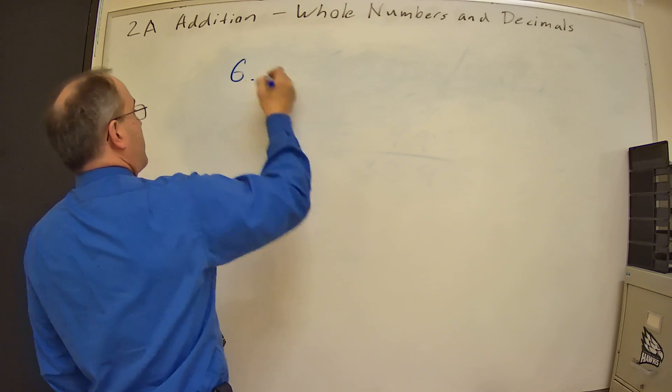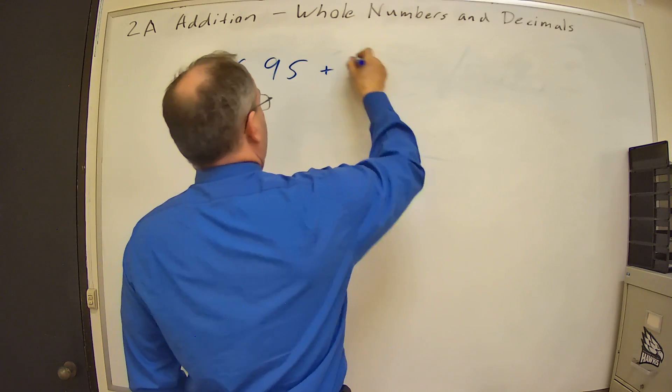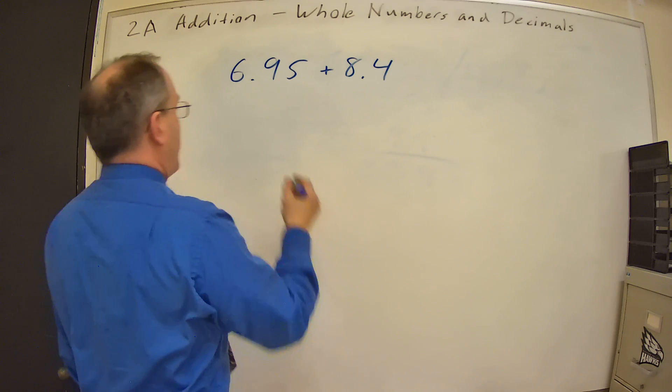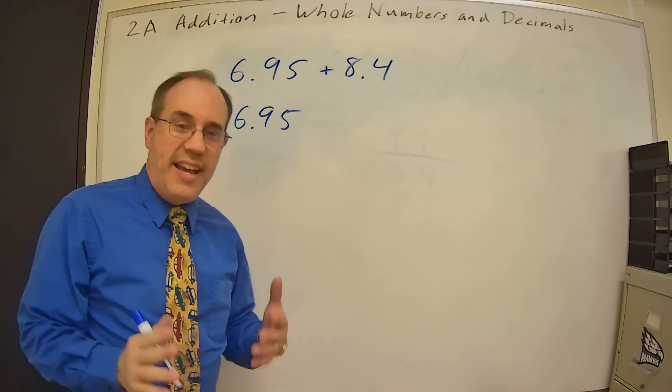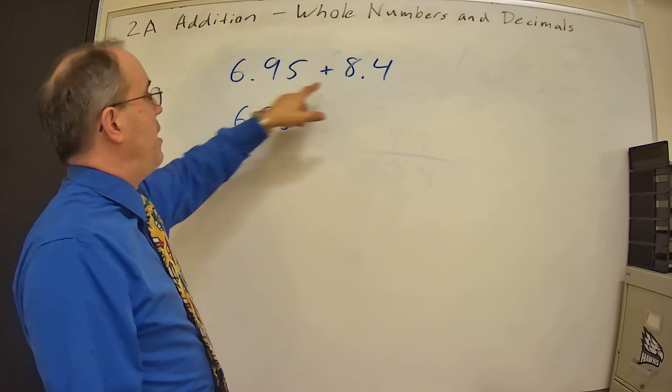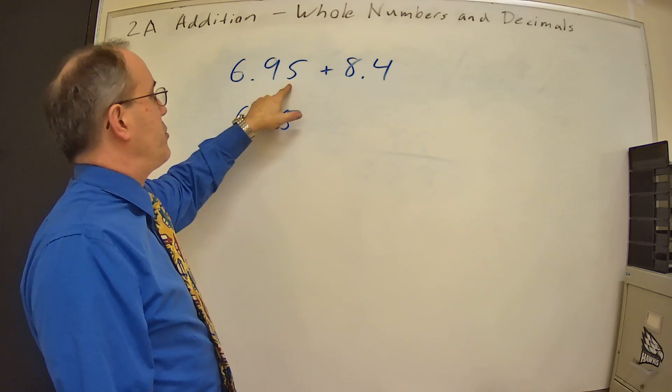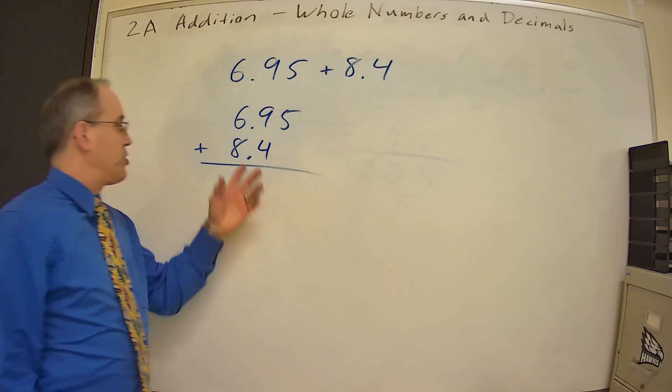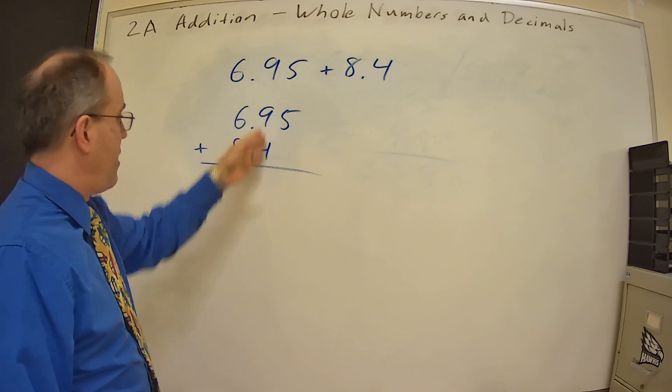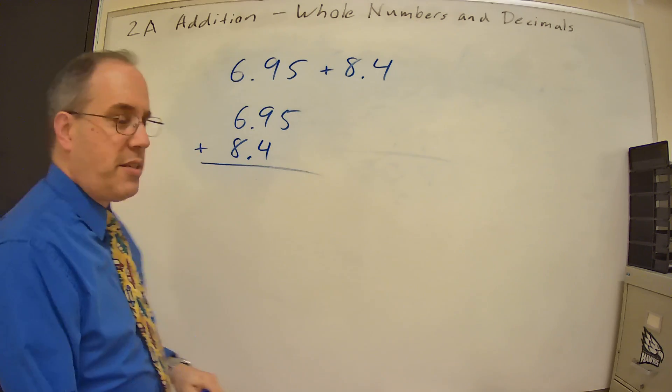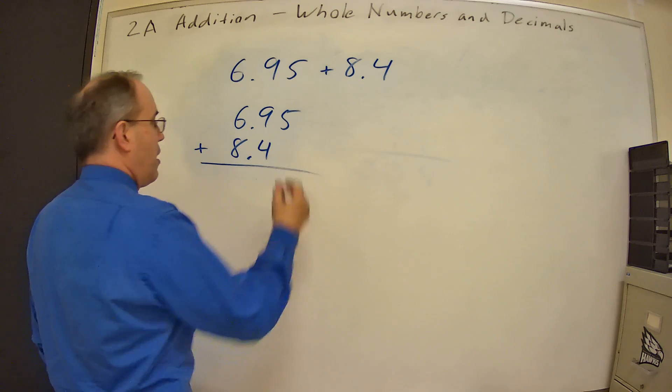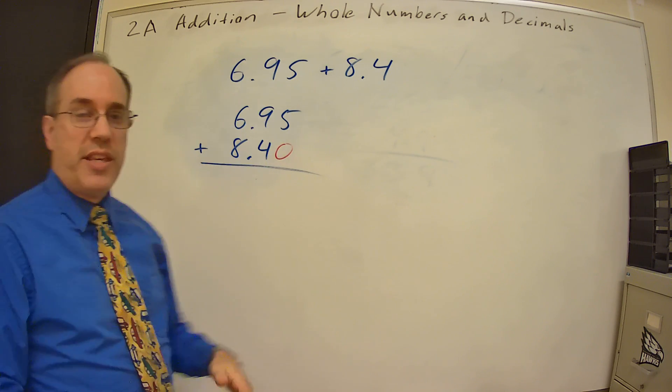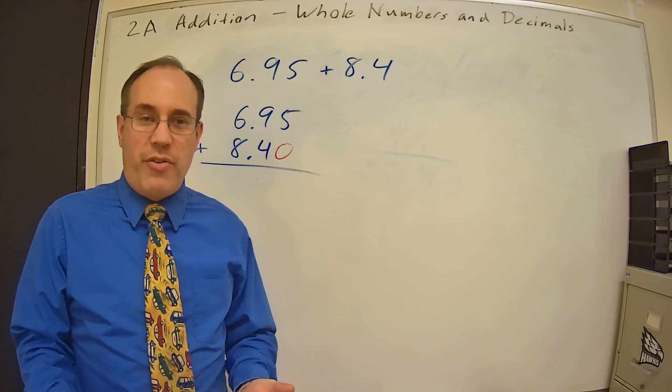I stress the line up the place values because look at what we could end up with. What if I have 6.95 plus 8.4? So now I have these two numbers that I'm going to add. So I go 6.95. Now I want to line up the place values. So this is the ones place, that's the ones place. That's the tenths place, tenths place, hundredths place. So 8.4, the 8 is in the ones place, the 4 is in the tenths place. So I just want to make sure that I get those lined up. Now one thing that I'm going to suggest with this is anytime you have a different number of decimal places, fill in the missing one with a zero. It just helps us to keep everything aligned properly and to avoid making simple errors because we don't have anything written down.